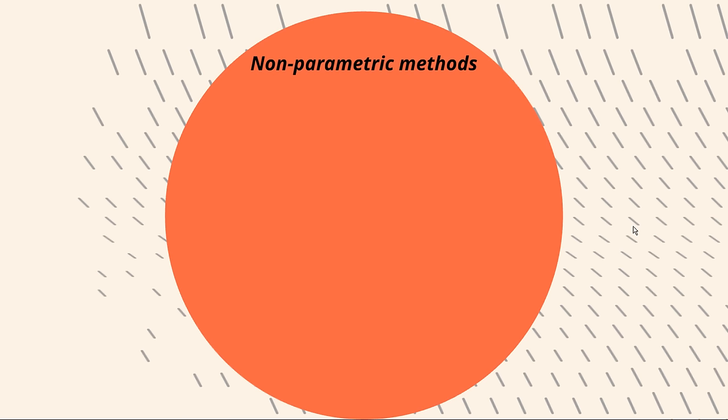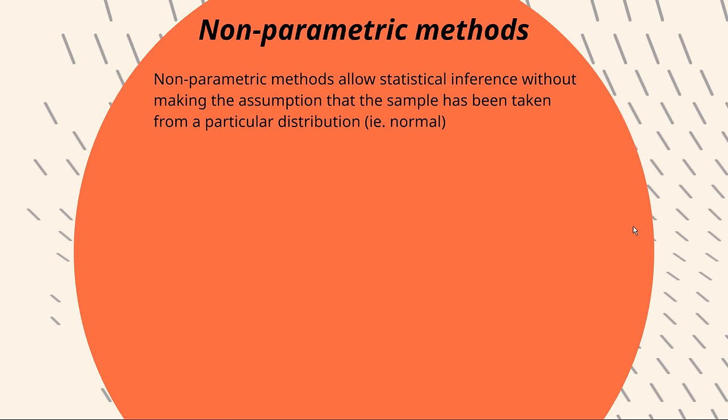So what's a non-parametric method actually mean? Here I've written that non-parametric methods allow statistical inference without making the assumption that the sample has been taken from a particular distribution. In this case, I've said here, for example, a normal distribution. And you'll notice that in previous videos, or in your studies generally, you'll have dealt with means and standard deviations, and both of those are parameters. And you might also have recognized that in the testing we've done up to this point, we're very quick to jump to a normal distribution table to assess our inferences. And in this case, we're going to be trying to deal without our trusty normal distribution table. Well, almost. It kind of sneaks in towards the end, but for the most part, we'll be trying to deal without these parameters.